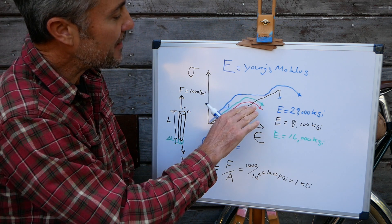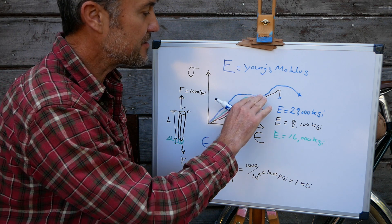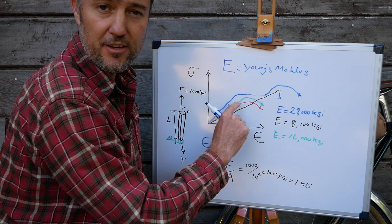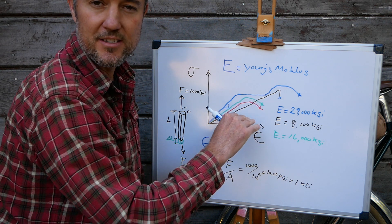Now compare that to these other materials and you don't see this horizontal line, this horizontal yield plateau that you would see with steel.